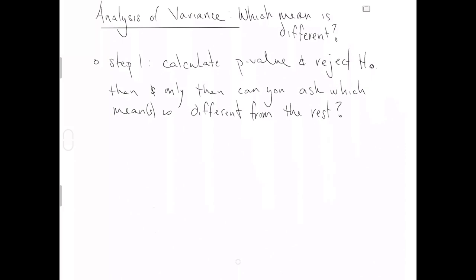When you reject H0, when you reject the null hypothesis in analysis of variance, you're essentially saying at least one of the means is different from the rest. But analysis of variance by itself doesn't tell you which mean specifically is suggested to be different. Only if you have rejected H0 can you ask which mean is different. If you have failed to reject H0, then you have evidence that the means are not different, so it is inappropriate to ask which mean is different.